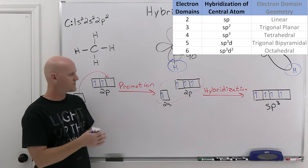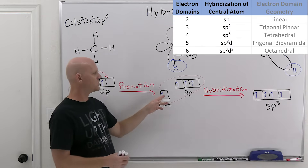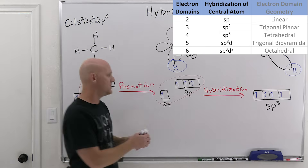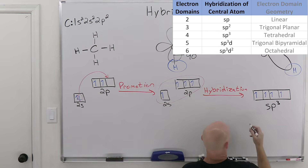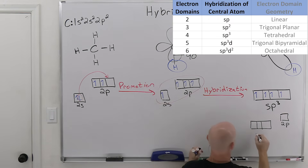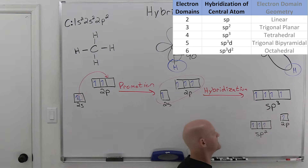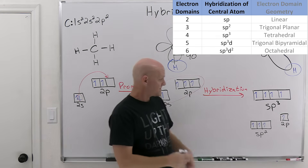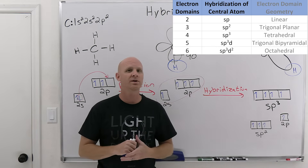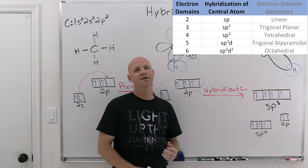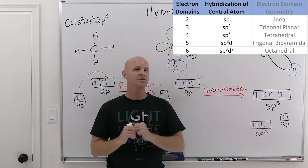With three electron domains, you'd still use the lowest energy s orbital first, then two out of the three p orbitals, leaving the last p orbital alone. Because you mixed an s and two p's, we call those hybrids sp2 hybridized. You'd then have an electron in an unhybridized p orbital — a plain p orbital not part of the hybrids. It magically turns out that the three sp2 hybrid orbitals are exactly 120 degrees apart, part of a trigonal planar electron domain geometry. So if you have three electron domains, you're sp2 hybridized.